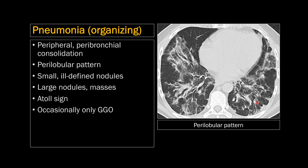On CT, organizing pneumonia classically shows peripheral and peribronchial consolidation, sometimes with a perilobular pattern — consolidation surrounding secondary pulmonary lobules. You can also have small ill-defined nodules, large nodules and masses, and something called the atoll sign, which is a peripheral area of consolidation with a central area of ground glass opacity. Occasionally, only ground glass opacity is seen.